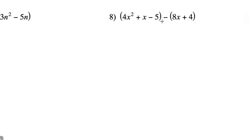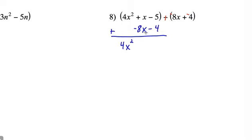Here's one last subtraction problem. Let's add the opposite of everything in the parentheses, line up the like terms, and add. Bring down the 4x squareds; 1x plus negative 8x equals negative 7x; and negative 5 plus negative 4 equals negative 9. So the difference is 4x squared minus 7x minus 9.